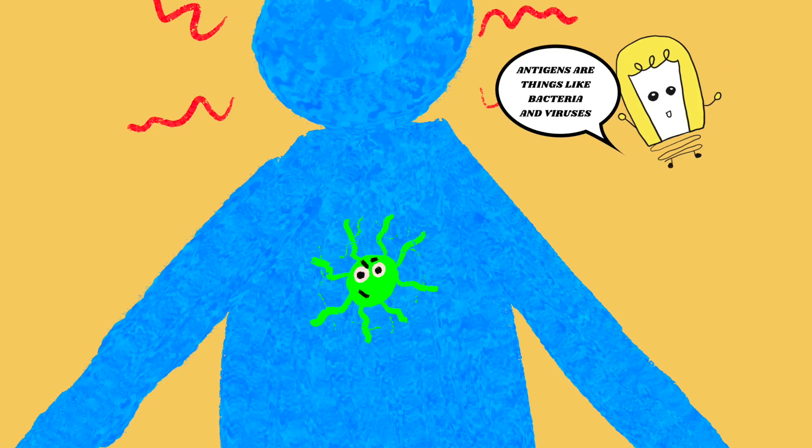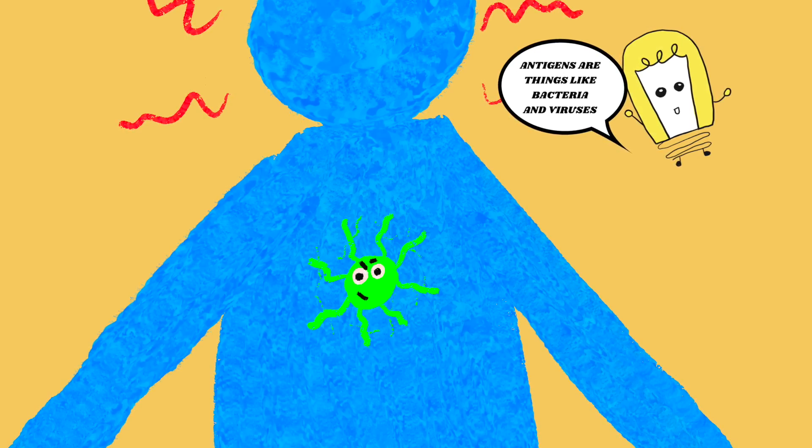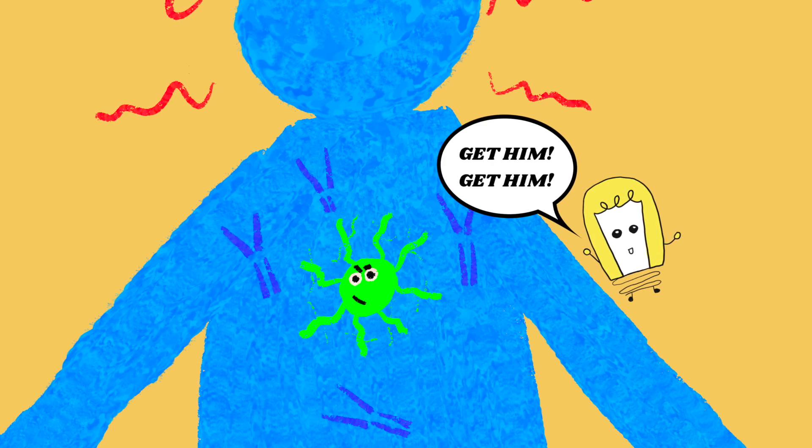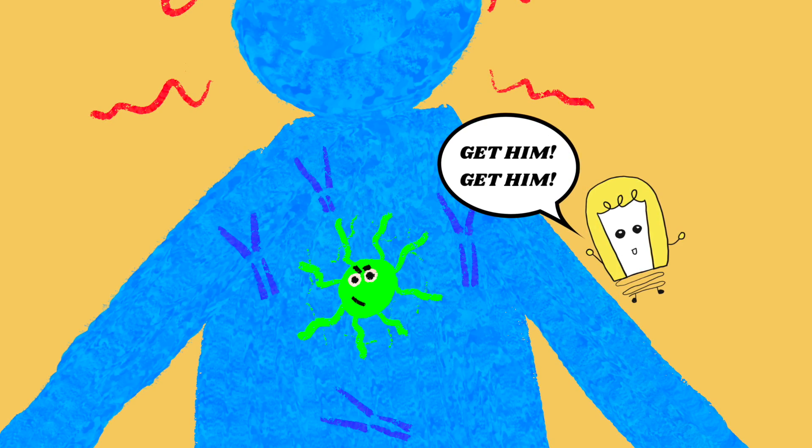Our body will produce antibodies to get rid of them. When a disease, also called an antigen, is in a child's body for the first time, the immune system will try to make antibodies to fight the antigens.